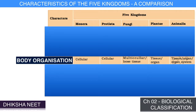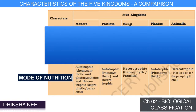In Fungi, multicellular loose tissue organization is found. In Plantae, tissue and organ organization is found. In Animalia, tissue, organ, and organ system body organization is observed.